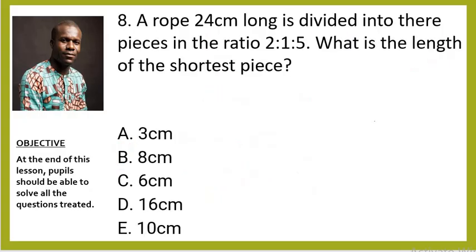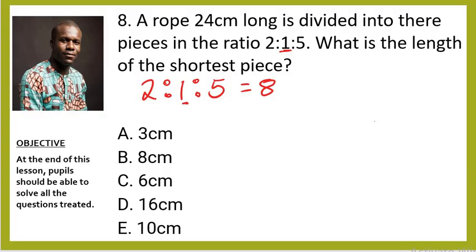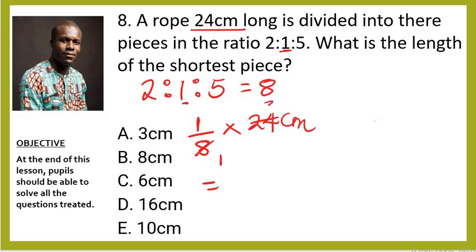Question eight: a rope 24 centimeters long is divided into three pieces in the ratio 2:1:5. What is the length of the shortest piece? The shortest piece corresponds to ratio 1. First find the sum of ratios: 2 + 1 + 5 = 8. The shortest length = (1/8) × 24 = 3 centimeters. The right option is A.